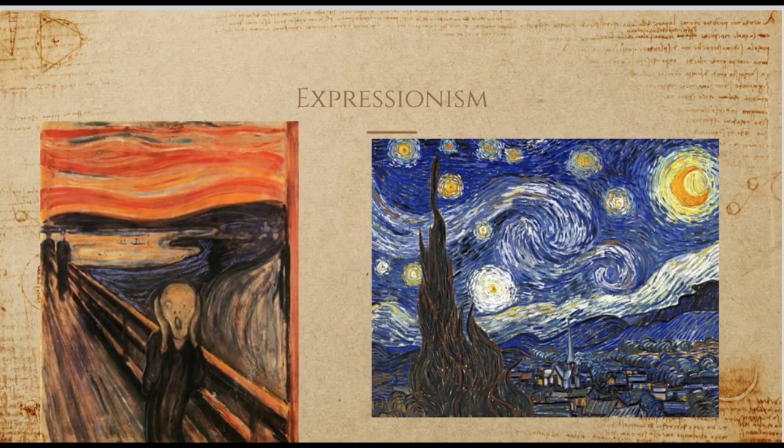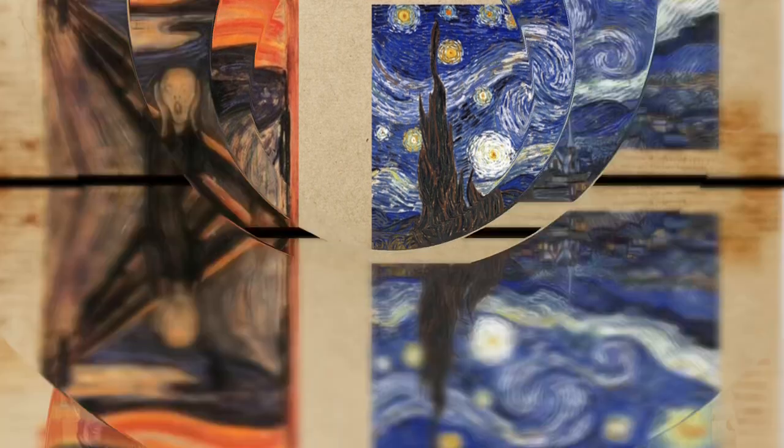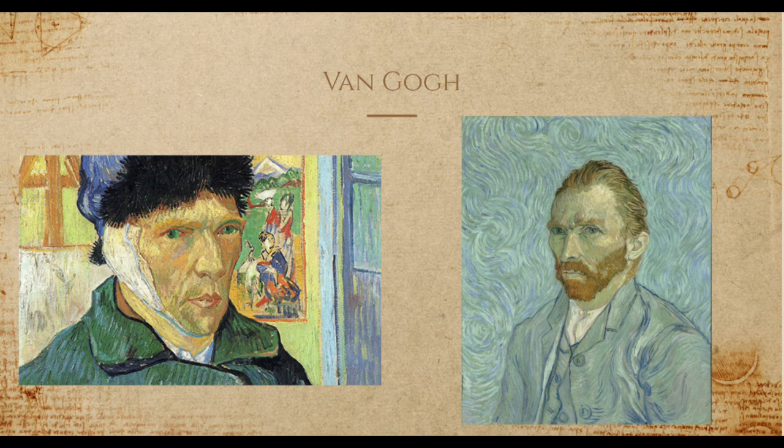Expressionist art was the portrayal of reality, but distorted to express the artist's inner feelings. This movement developed from World War I, capitalism, and the rise of industrialization. Van Gogh was a very mentally ill man with tremendous abilities. As he grew older, he started to gain horrible anxiety to the point where he was experiencing hallucinations and psychotic breaks. Van Gogh inspired this Expressionism era and many artists in it.